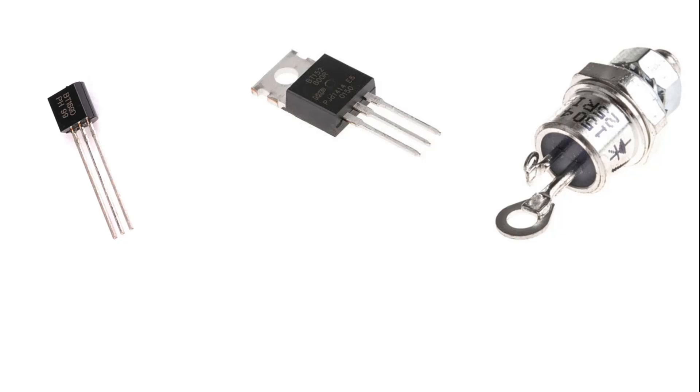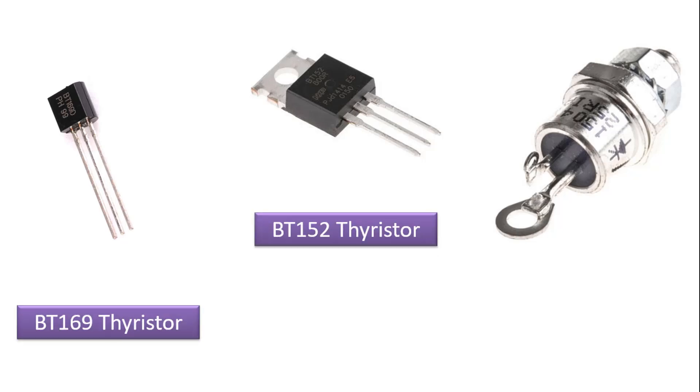It is possible to come across different types of thyristors in daily life. For example, with the BT-169 thyristor you see on the left, a current of 500 milliamps can be controlled. With the BT-152 thyristor in the middle, a current of about 13 amps can be controlled. With the thyristor on the right, a higher current of about 25 amps can be controlled. There are also different types of these thyristors that can be used at higher currents.